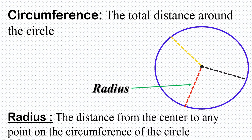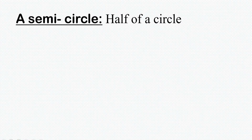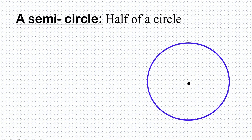Having understood this, let's move to the next part of the circle — semicircle. When we talk of a semicircle, we are talking about half of a circle. So if this is a circle, then half of this circle is what we term as a semicircle.